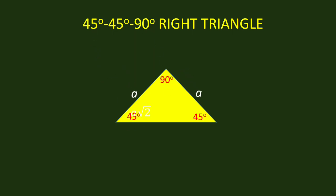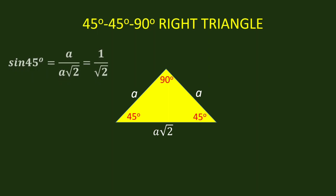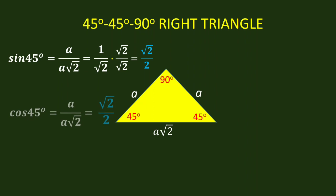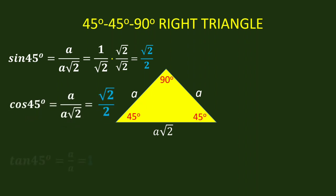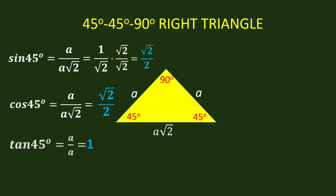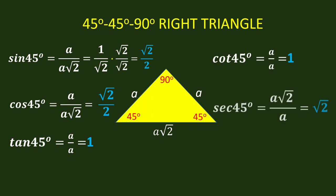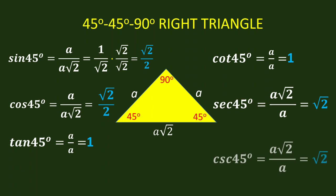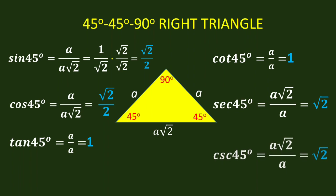Given this triangle, we want to find the 6 trigonometric ratios. Sine 45 degrees is A over A square root of 2, which is 1 over square root of 2. Rationalizing, we get square root of 2 over 2. Cosine 45 degrees is also A over A square root of 2, the same as sine 45 degrees, so it equals square root of 2 over 2. Tangent 45 degrees is A over A, which equals 1. Cotangent 45 degrees is A over A, also equal to 1. Secant 45 degrees is A square root of 2 over A, which equals square root of 2. Cosecant 45 degrees is also A square root of 2 over A, which equals square root of 2.